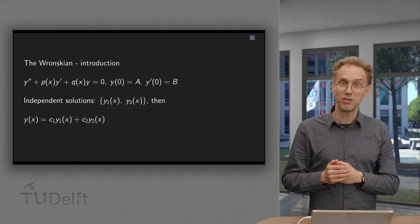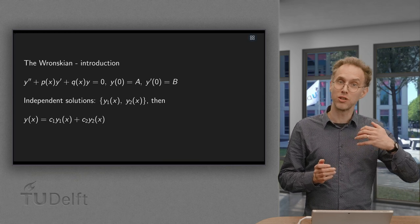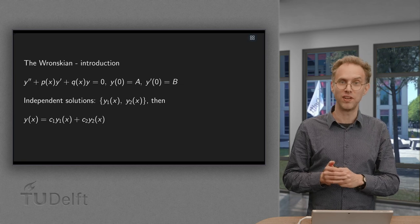Fortunately, we have an easy way to check this, as long as our functions are nice enough. We can use the so-called Wronskian, which we will introduce in this video.